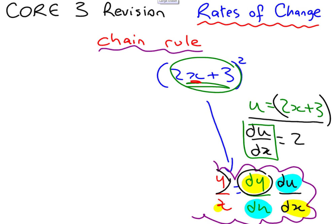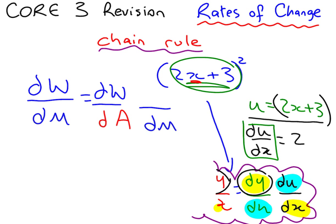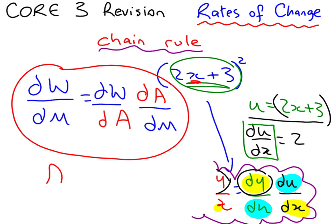All you need to know is this chain rule is going to work with any letters that you can imagine. So plucking random letters out of the air, dw by dm, you can make it up by having dw at the top, dm at the bottom, and whatever you want in between. What's a weird letter? Let's say we don't want to use d, that will get confusing. Let's say A. So that is the chain rule in action.